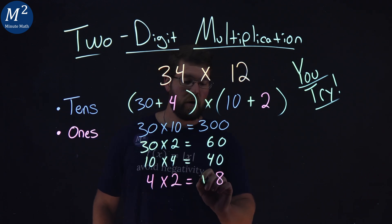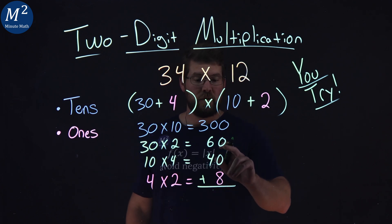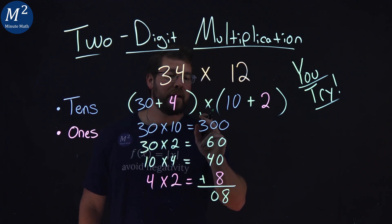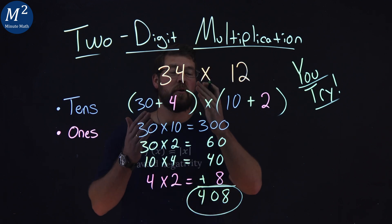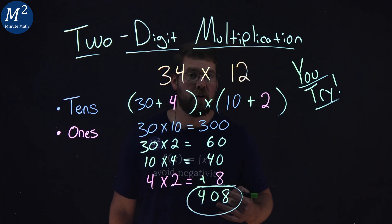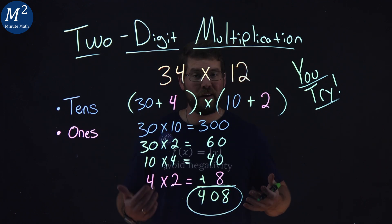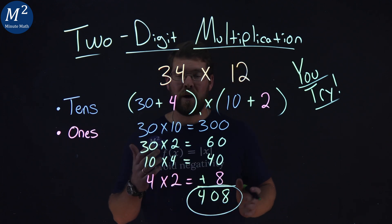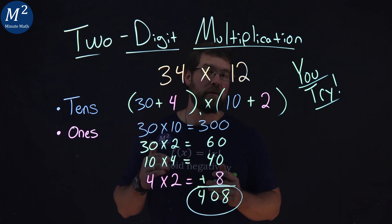Now, we can add up all of these numbers here to get our answer. 0 plus 0 plus 0 plus 8 is 8. 0 plus 6 plus 4 is 10. So, 0 carry the 1. And 1 plus 3 is 4. And so, 34 times 12 is 408. Is that the answer you got? Did you follow the same method here? Did it work? If so, way to go. If not, you can pause this video, rewind back, and re-watch it to make sure, see where your steps lined up with mine.